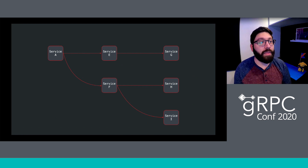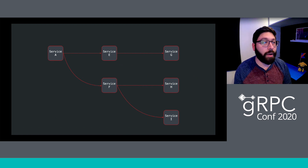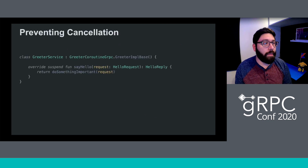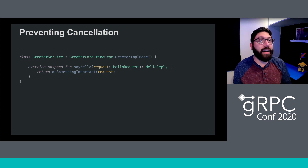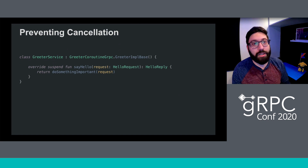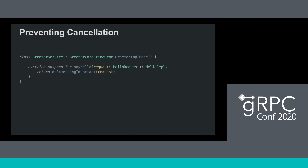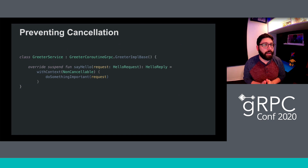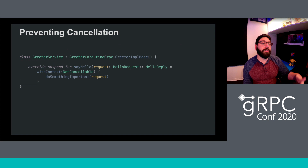However, cooperative cancellation is not a behavior that we always want. There are times where we want to opt out — for instance, ensuring a method completes successfully or wrapping logic in a transaction and rolling back. There are many cases where we don't want to terminate even though the client has finished. The simplest option is to wrap your method implementation with NonCancellable context, which protects that block of code from receiving any signals that might try to cancel its execution.